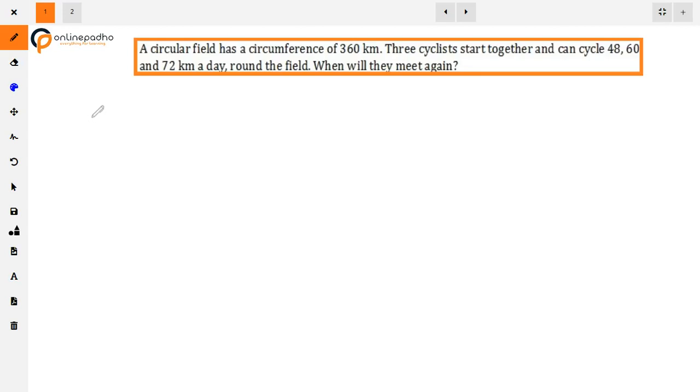The question is: a circular field has a circumference of 360 km. Three cyclists start together and can cycle 48, 60, and 72 km a day around the field. When will they meet again?